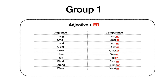Si te fijas, el adjetivo está hacia el lado izquierdo de la pantalla: long, small, loud, quiet, quick, slow, tall, short, strong, weak. Y los comparativos al lado derecho — longer, smaller, louder, quieter, quicker, slower, taller, shorter, stronger, weaker — lo único que se hace es agregarle esas dos letras ER. Easy peasy, súper fácil.